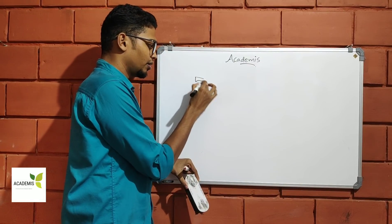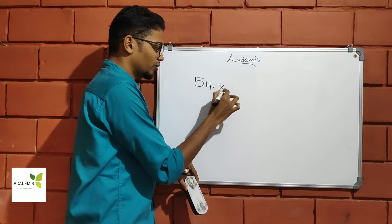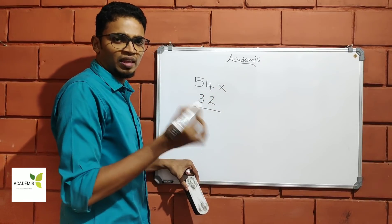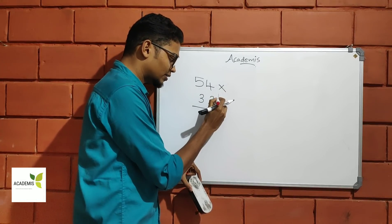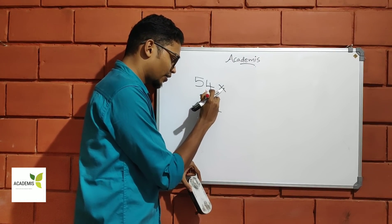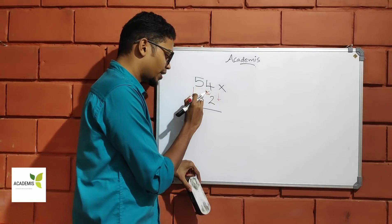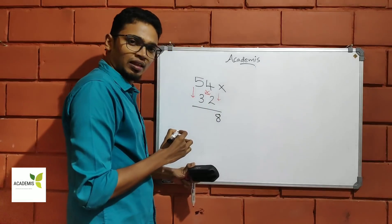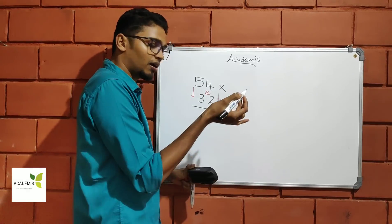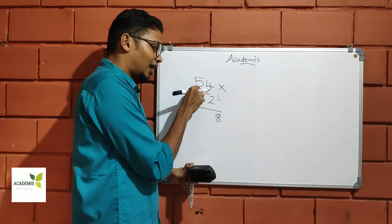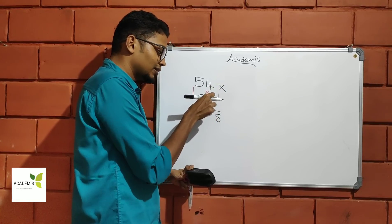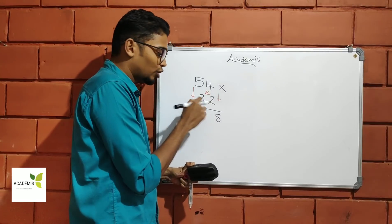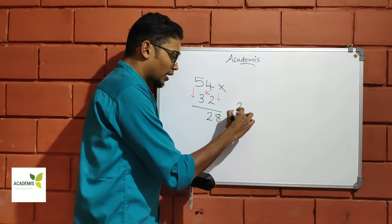I will be ready for the next step: 5 to 4. We will do that the same way, the same step. This step is 4 to 2. First step — I will add — this step is X. 5 times 2 equals 10, plus 4 times 3 equals 12. So 10 plus 12 equals 22.